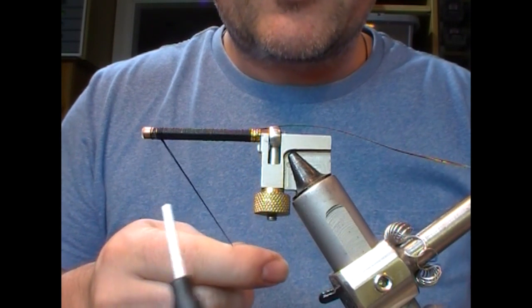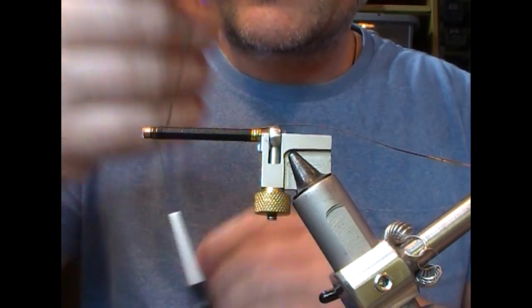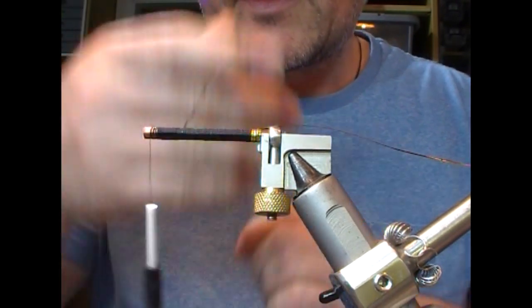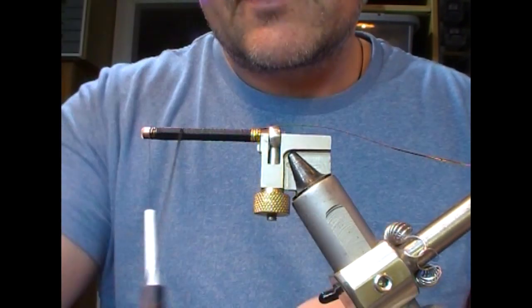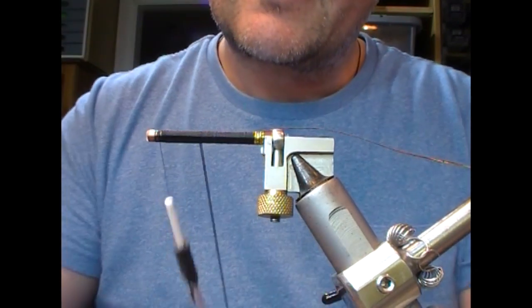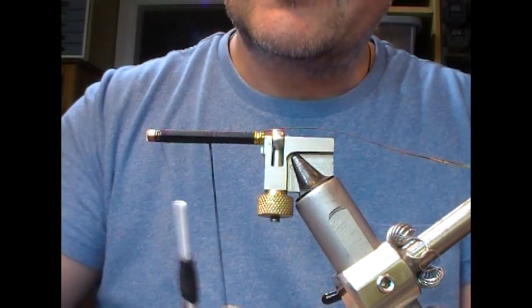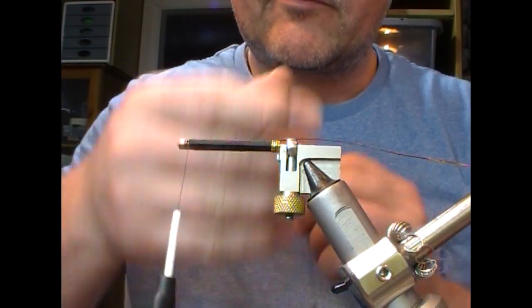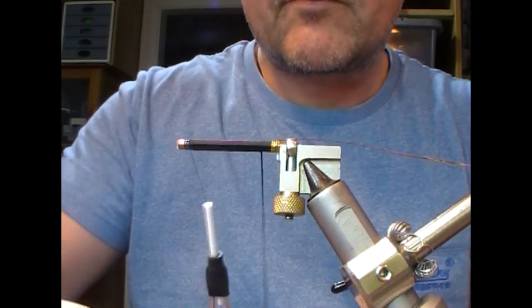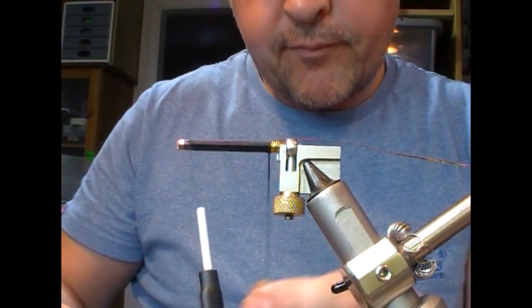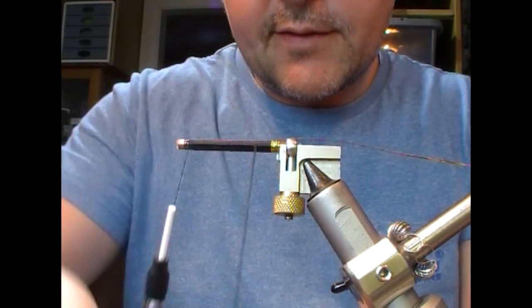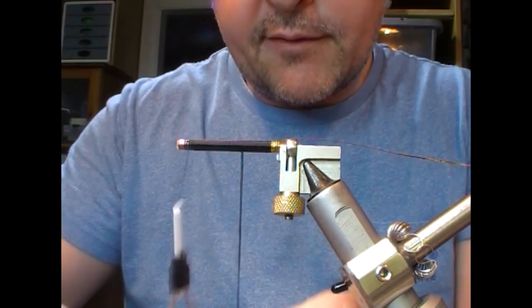Couple of turns to hold it in place. And I'm now wrapping two strands backwards. Two strands gives me I think a more level wrap. So long as I can keep them side by side. And quicker coverage.